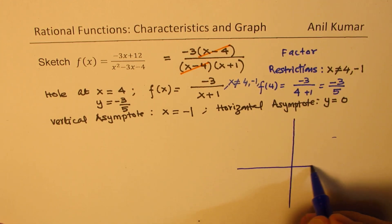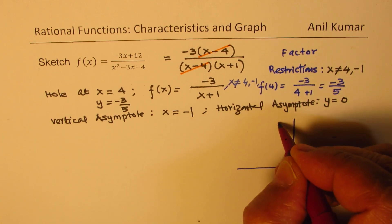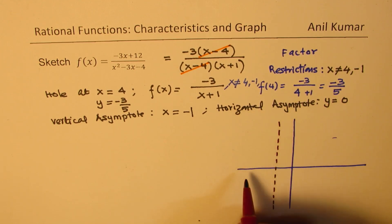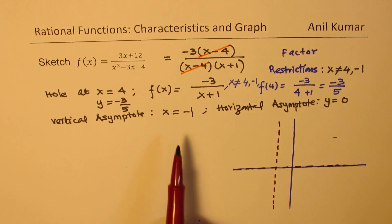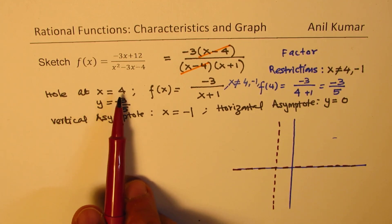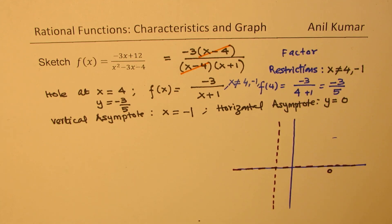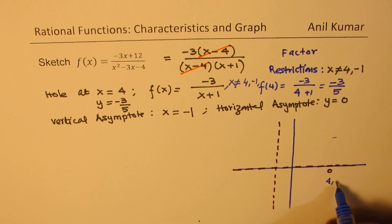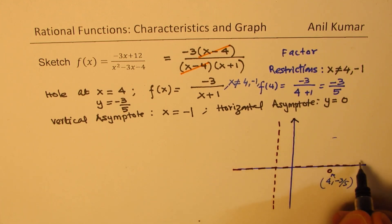Now I will sketch this. We have a vertical asymptote at x equals minus 1 — let me draw this here. We have a horizontal asymptote which is y equals 0. And we also know there is a hole at x equals 4, y equals minus 3 over 5. So let's say this point represents the hole, whose position is x equals 4, y equals minus 3 over 5. That becomes the framework around which we are going to work.